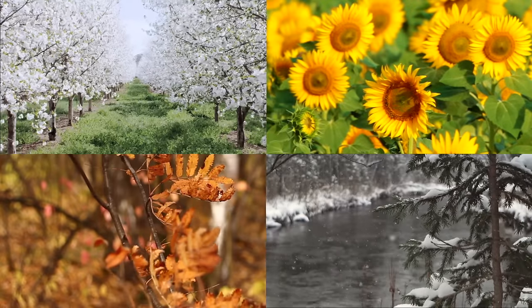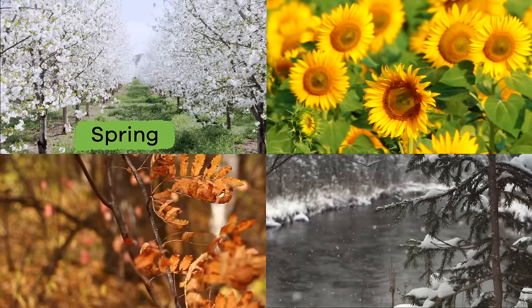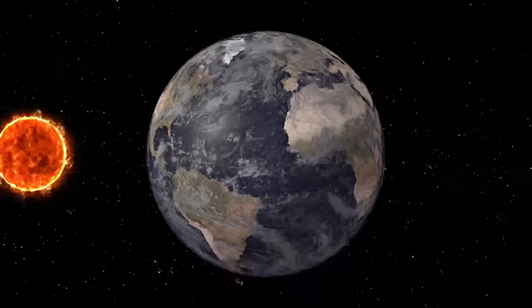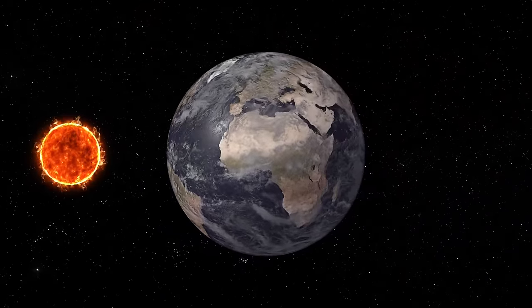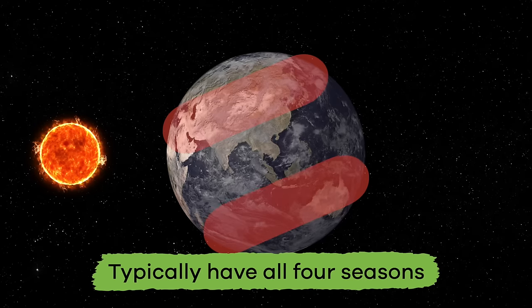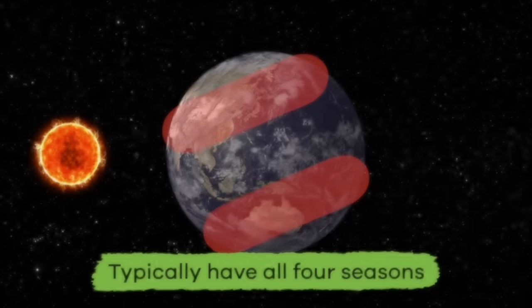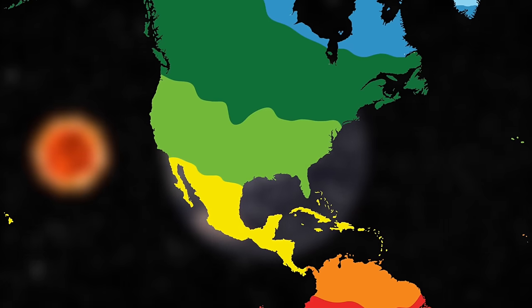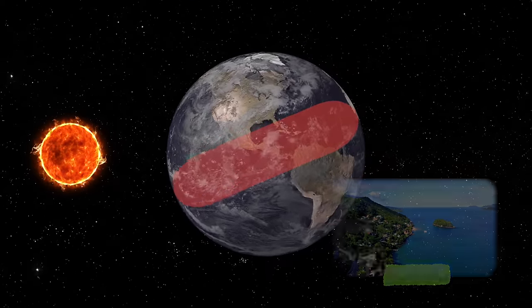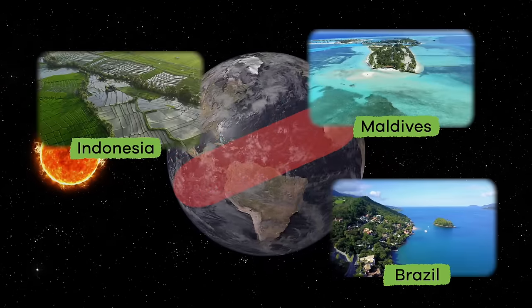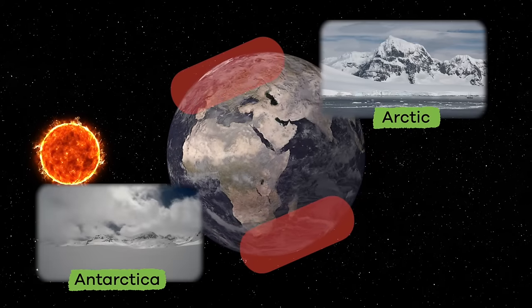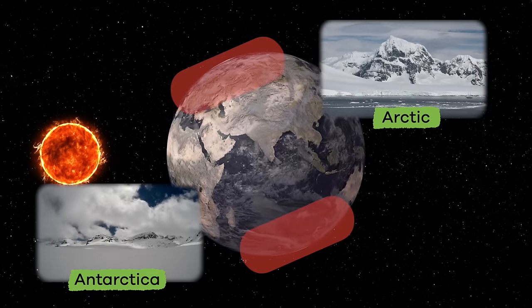There are four seasons: spring, summer, fall, and winter. The parts of our planet located halfway between the north and south poles typically have all four seasons, like a lot of areas in the United States. But this is not true of everywhere. In places near the equator, it feels like summer all year round. And in places near the north pole or the south pole, it always feels like winter.